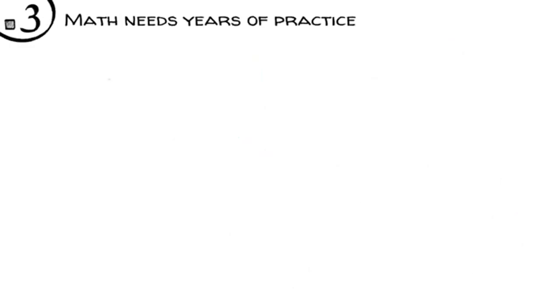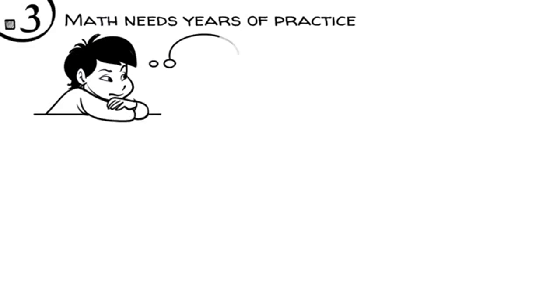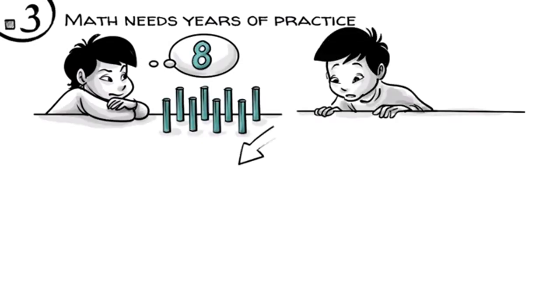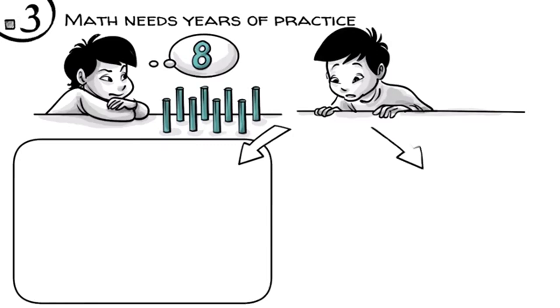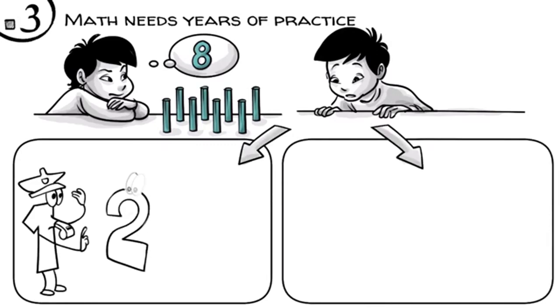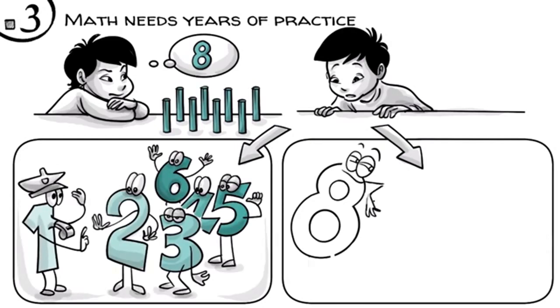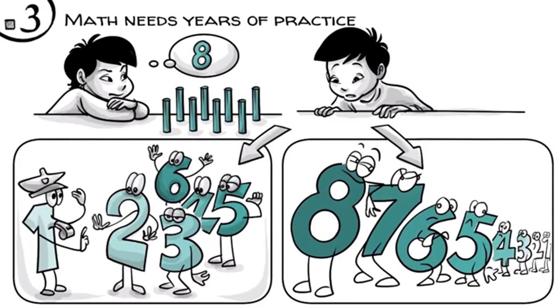Math needs years of practice. This becomes clear when we look at how children learn to understand a number, say, eight. Not the symbol eight, but the idea of the quantity of eight. To internalize this seemingly simple idea, children need a lot of practice in two skills. First, they need to learn how to create order, and then, later on, how to create hierarchical relationships.